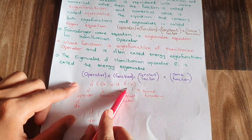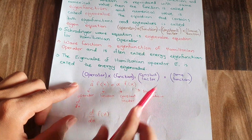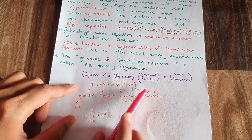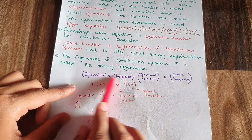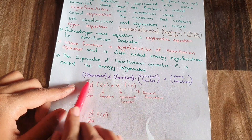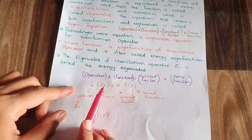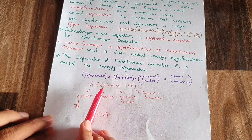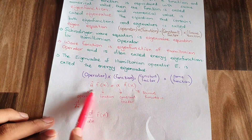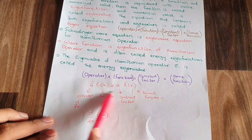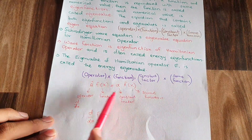So 'a' is the constant factor and 'f' is the same function. This equation is following the general structure of the eigenvalue equation, so I can say that this is an eigenequation.